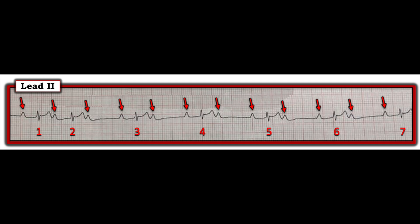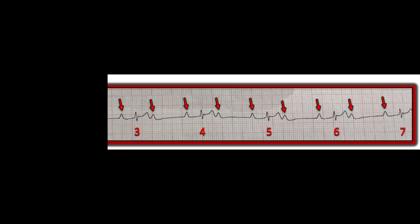How about the ventricular rhythm — is it regular throughout? It's fairly regular for most of the rhythm except in the beginning. The rate: what is the ventricular rate? Let's forget about the first two beats for a moment. How many large boxes in the R-to-R interval? One, two, three, four, five — a little bit more than six boxes. The rate is a little bit under 50 beats per minute.